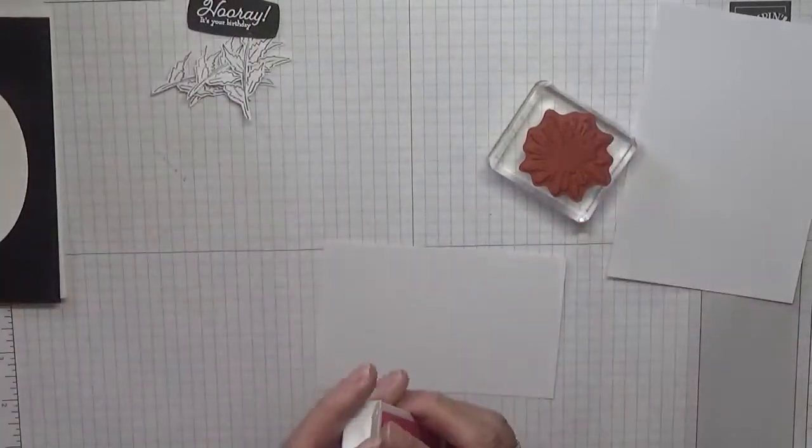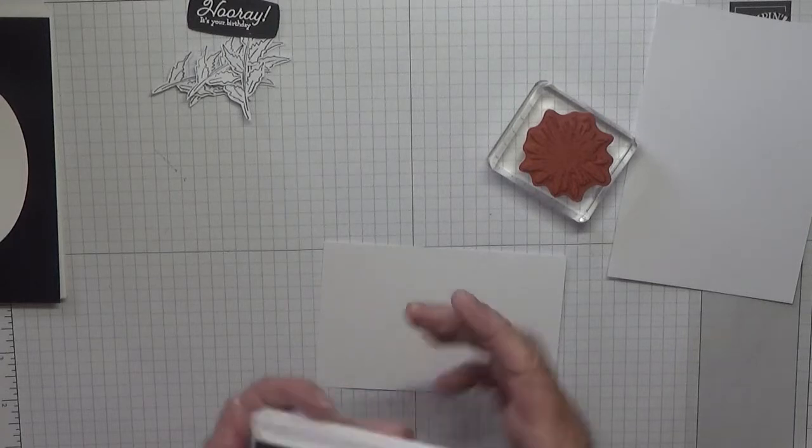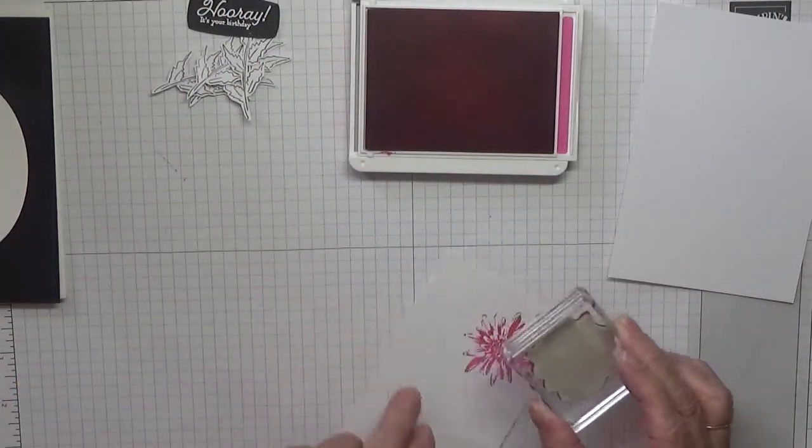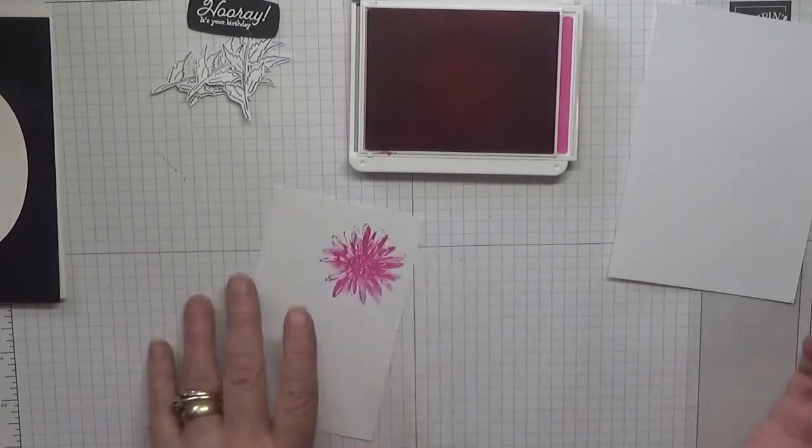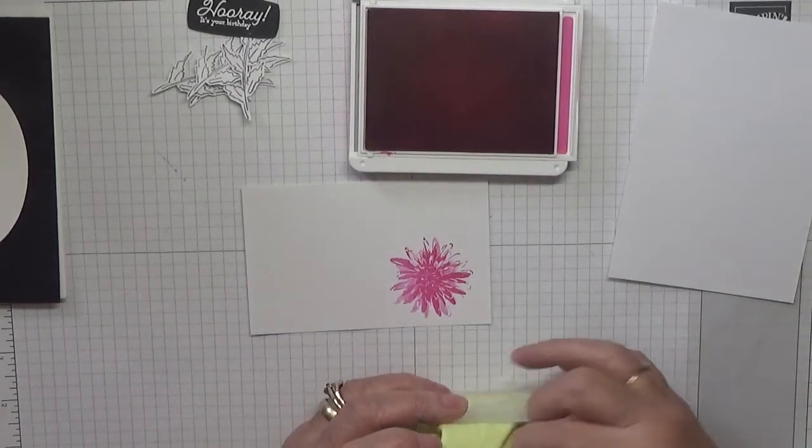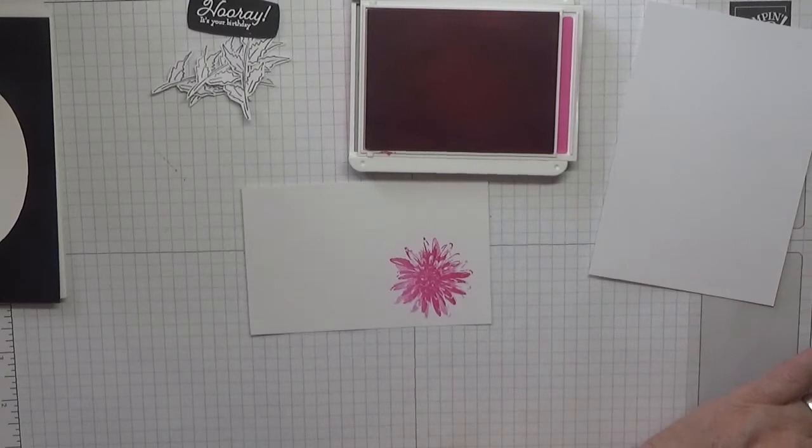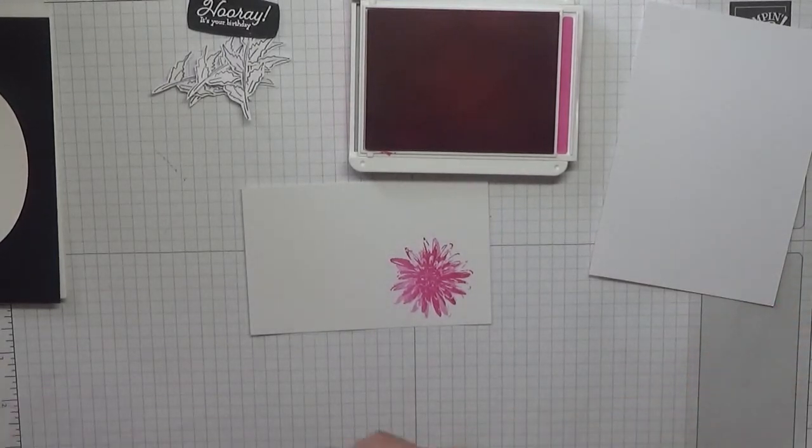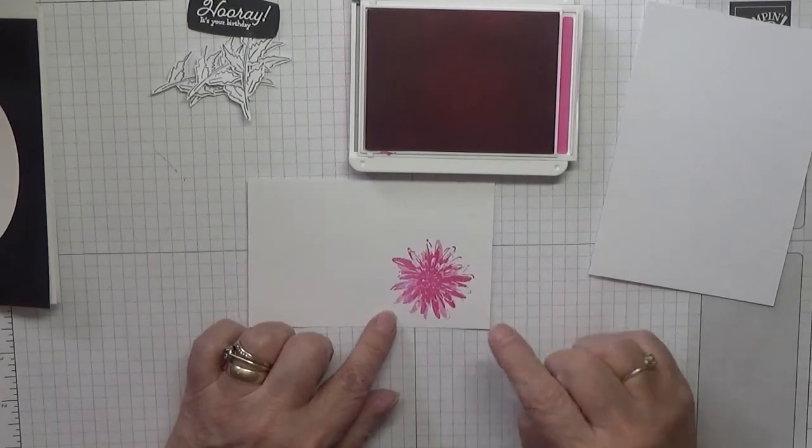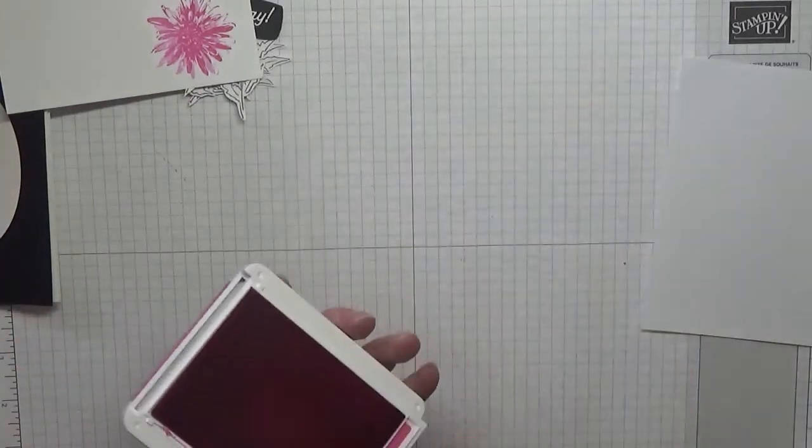So to get started, I need a scrap of white for the flower. Let's stamp that first. This one I'm going to do in Magenta Madness. Do it a bit brighter. Stamp that, turn the card round and stamp it again, make it a bit fuller. Clean my stamp and we'll fussy cut that out.